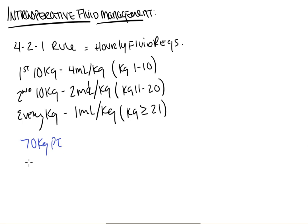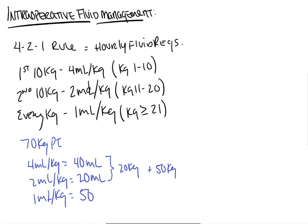So for a 70 kilogram patient, they would get 4 ml per kg for the first 10, so they would get 40 ml. Then they would get 2 ml per kg for the next 10, so that's 20 ml. And then they would get 1 ml per kg for the next 50 kilograms. And so our total ml for this patient is 110 ml per hour, and that's their fluid requirements.